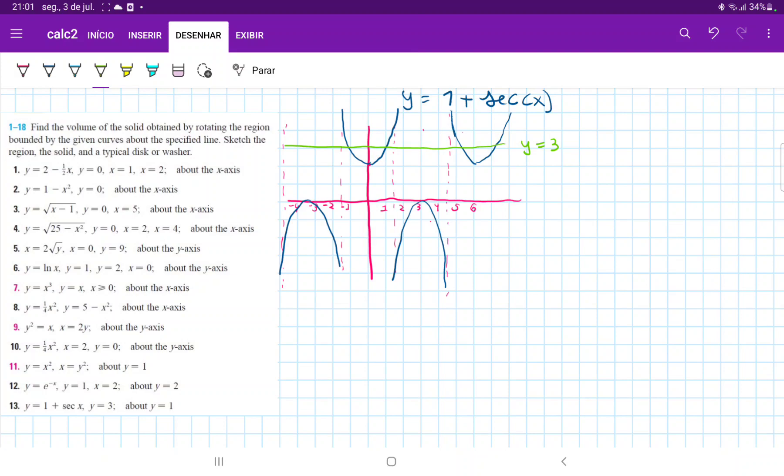So I've drawn the graph 1 plus secant x, that is this equation here, and this is just a regular secant graph, but it's been shifted upwards 1. And then the line y is equal to 3 over here.